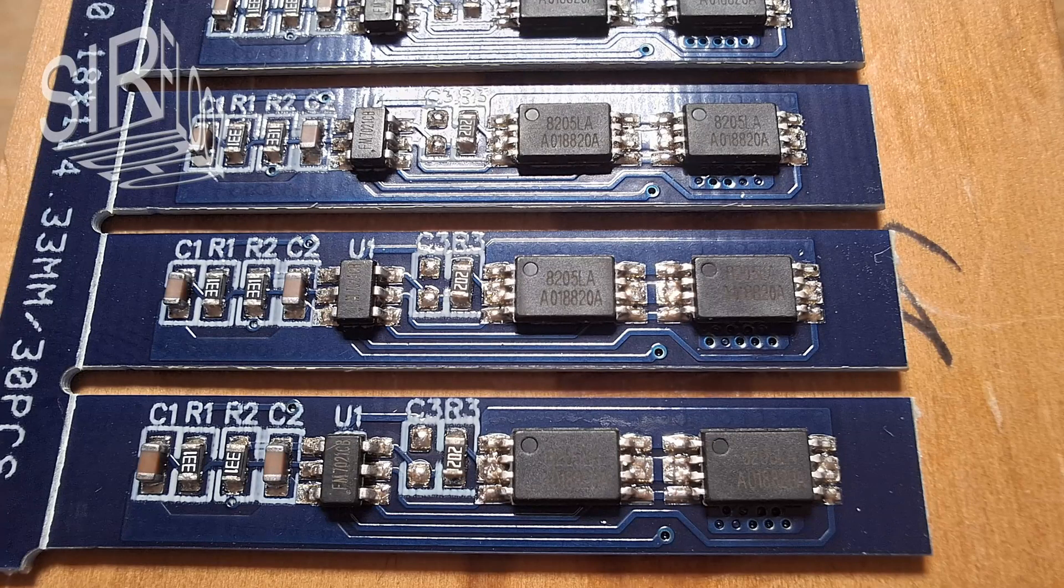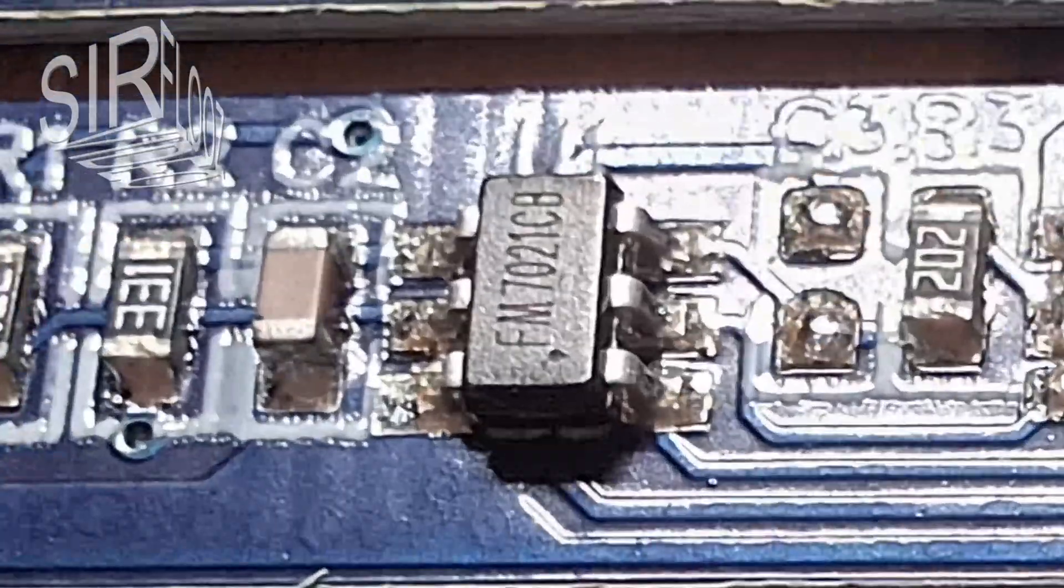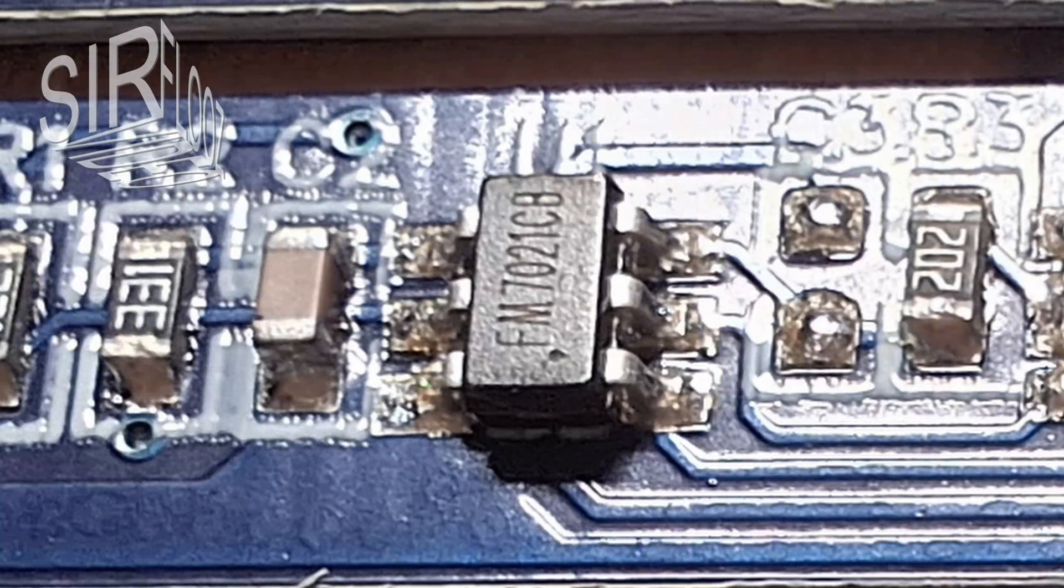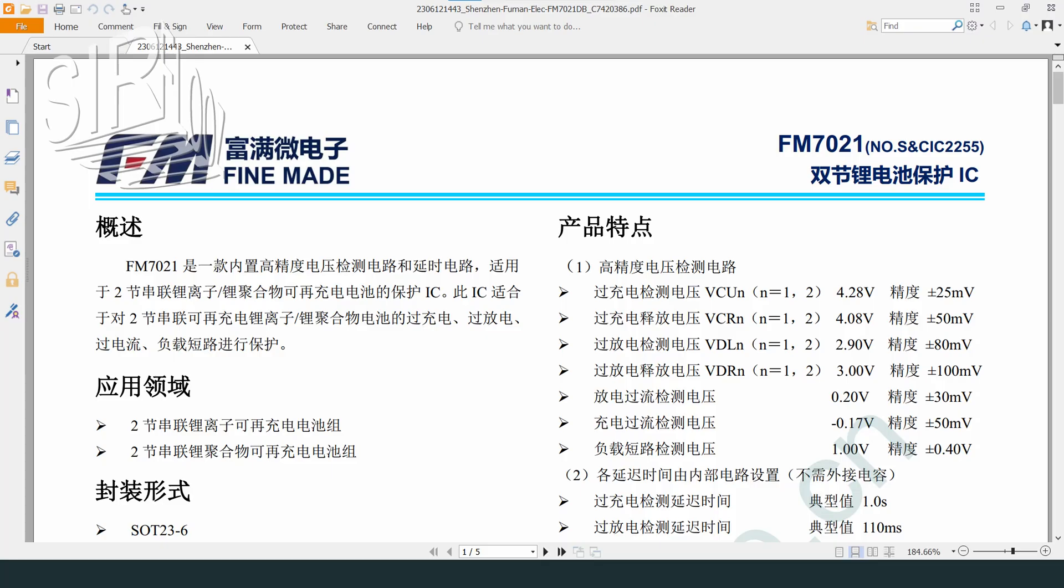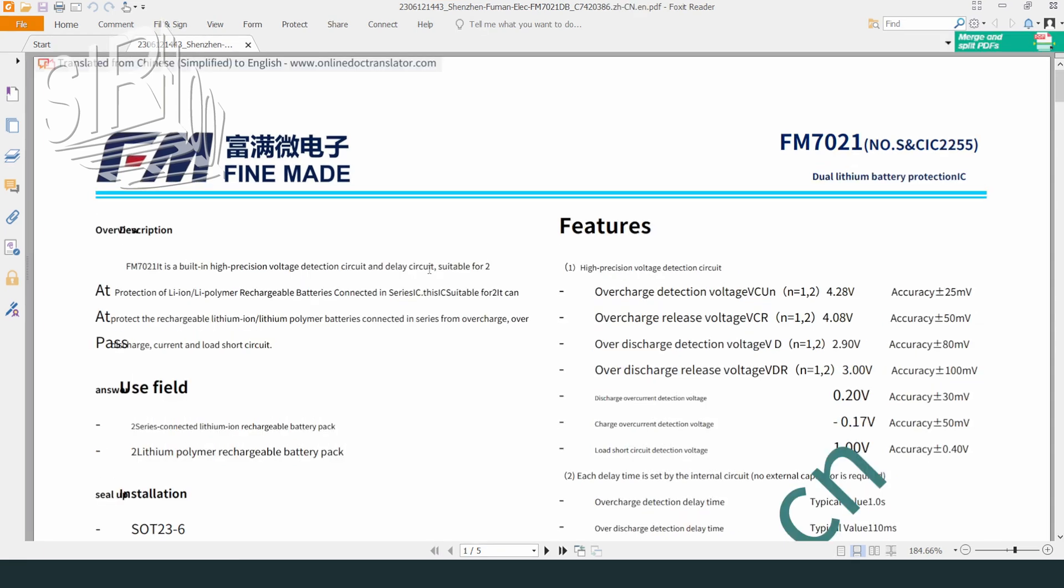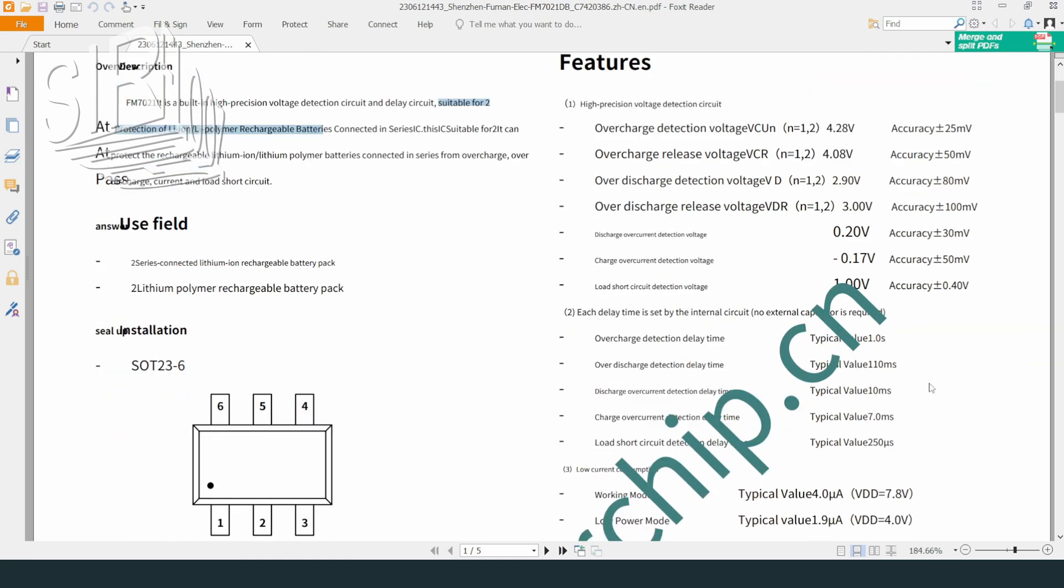The control can then only be in the small IC next to it. The model number is FM7021CB. I actually had to search for quite a while, but I actually found the Chinese data sheet and had it translated into English. So it is a special lithium-ion protection IC for two cells connected in series, and as expected, the IC has a delay for the protection functions.